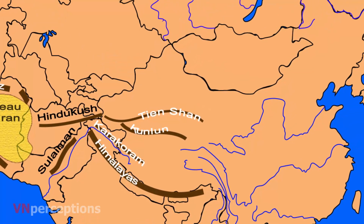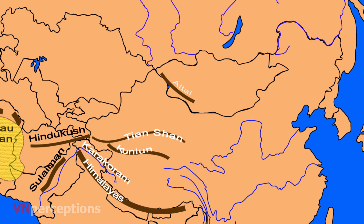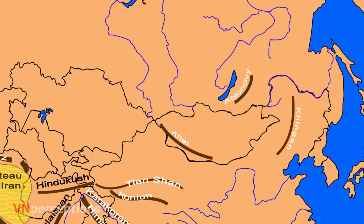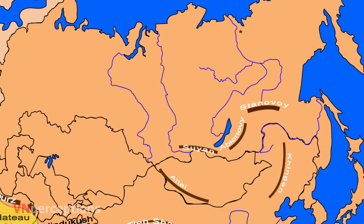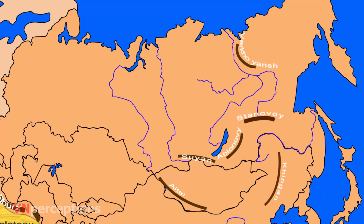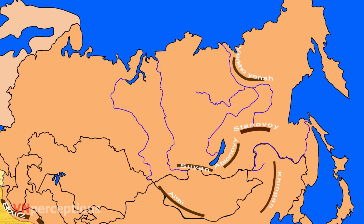The Tian Shan is the northernmost range branching out from the Pamir Knot and extends northeastward into China. Other important ranges include the Altai, Khingan, Yablonovy, Stanovoy, Sikhote-Alin Mountains, Verkhoyansk Mountains, Kolyma Mountains, and Ural Mountains.